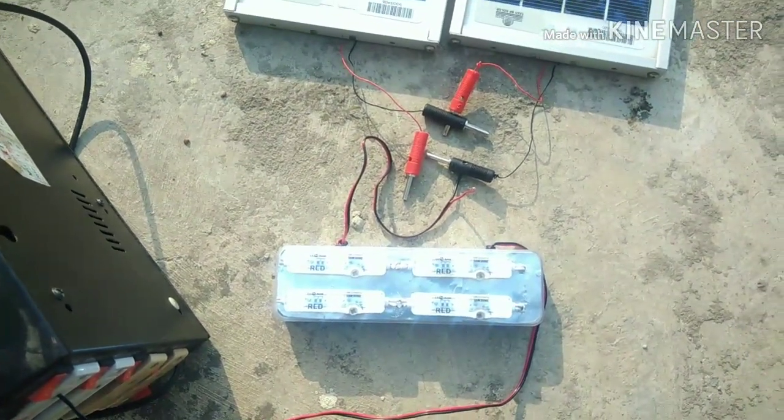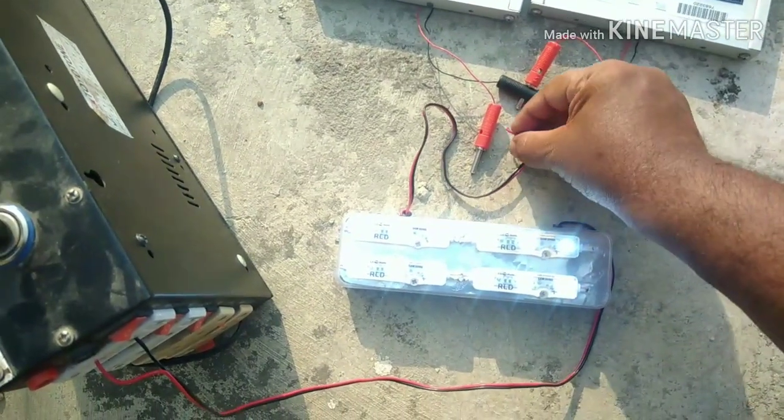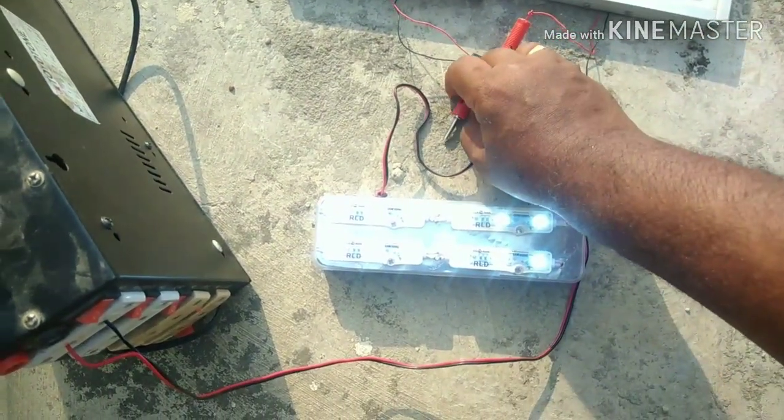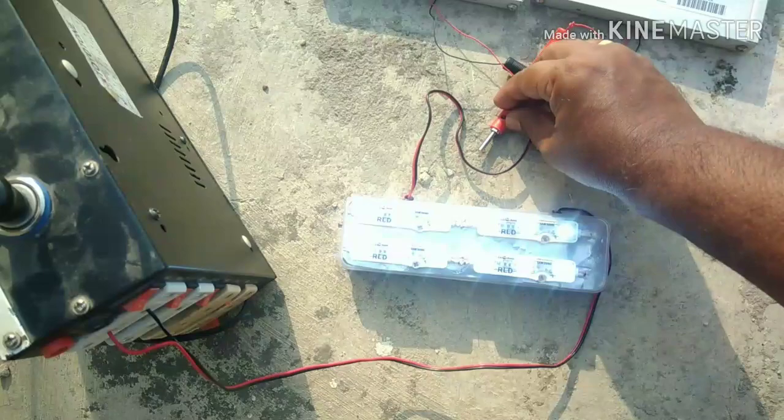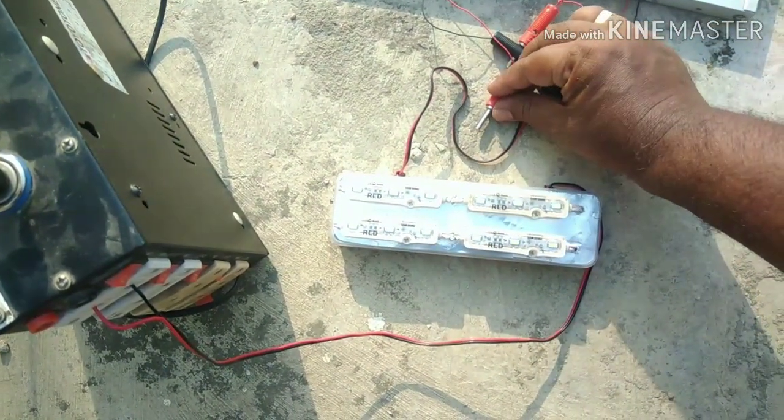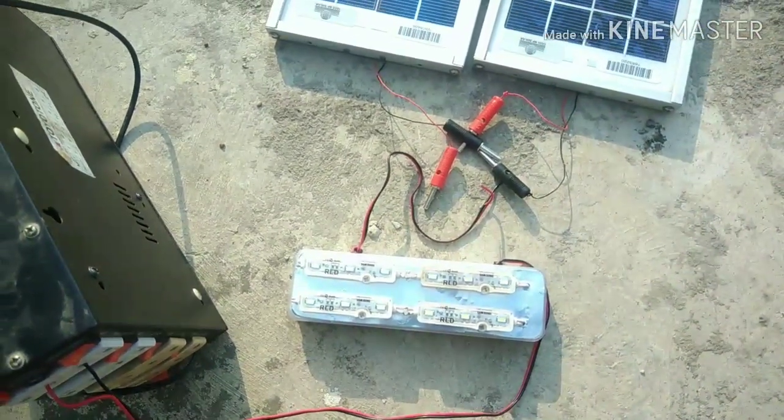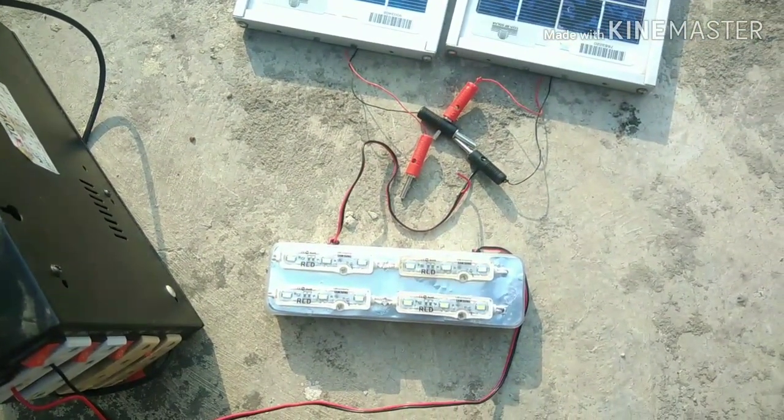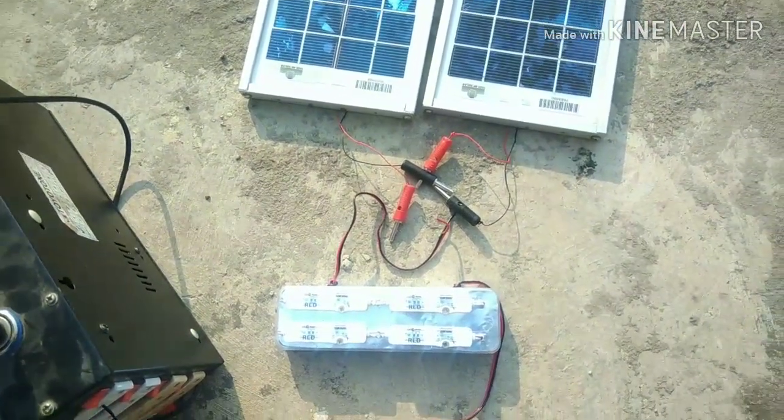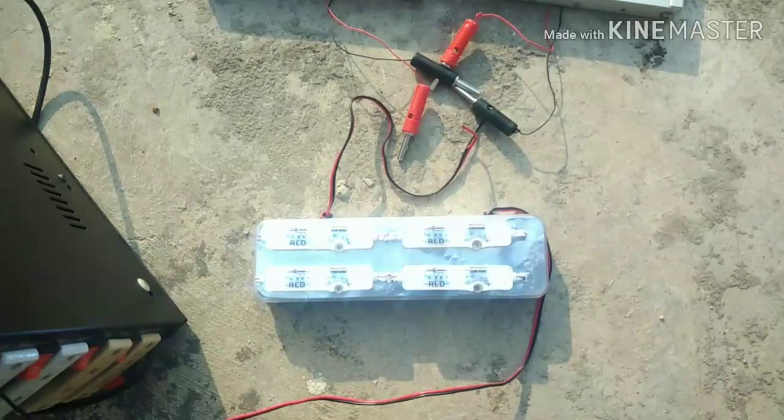Since there is a capacitor inside it takes a bit of time for the light to come up. You can see the light has come up. Now if I again put it back to the charging condition by connecting to the solar panel, the light will go off. It takes a couple of seconds to come on because of the capacitor inside the charger.